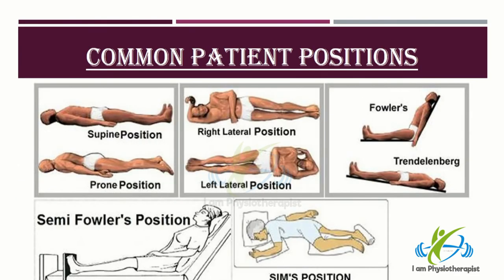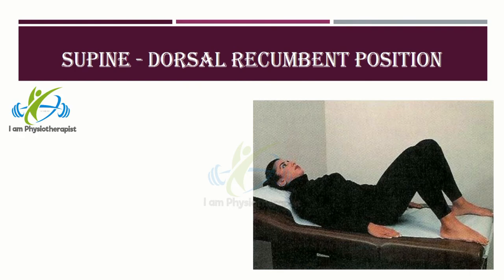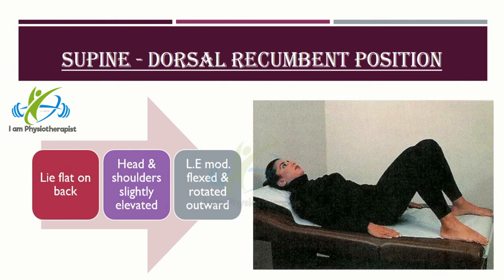Common patient positions: Supine position, or dorsal recumbent, is where the patient lies flat on the back with head and shoulders slightly elevated using a pillow unless contraindicated — for example, in spinal anesthesia or spinal surgery. The lower extremities are moderately flexed and rotated outward. It is employed in the application of obstetrical forceps, repair of lesions following parturition, vaginal examination, and bimanual palpation.